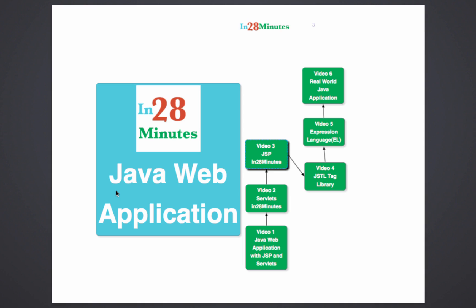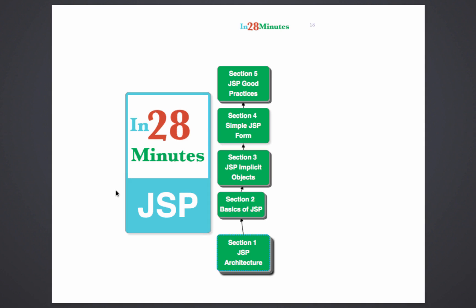In the videos after this, we will look at JSTL expression language and a real-world Java application — covering things like form validation, exception handling, and more. In this video, let's focus on JSP. We'll first understand the architecture of a JSP, then move on to the basics including implicit objects, create a small JSP form, and look at a few JSP good practices.